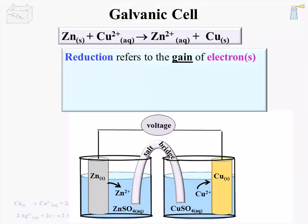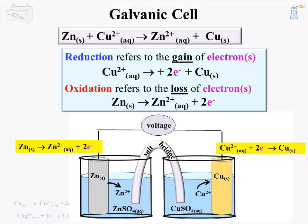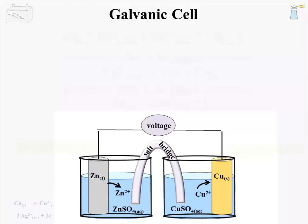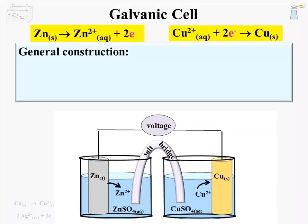The reduction component of the reaction is the copper ion of the copper sulfate salt gaining two electrons to form the solid. The two electrons come from balancing the half-reaction, as discussed in the earlier electrochemistry lectures. The oxidation component is the zinc solid losing two electrons and forming the zinc ion. These half-reactions describe the chemistry of the half-cells and are the basis of the general construction of the galvanic cell.